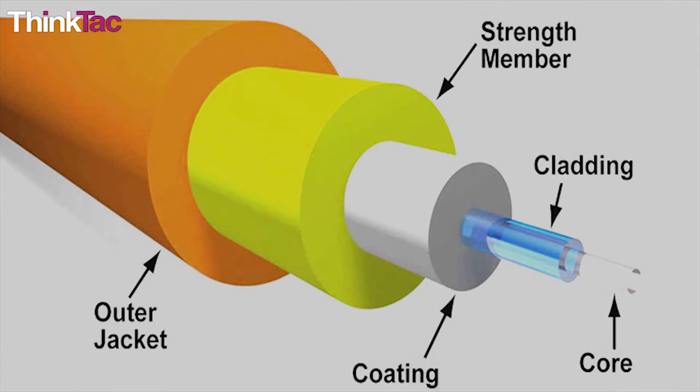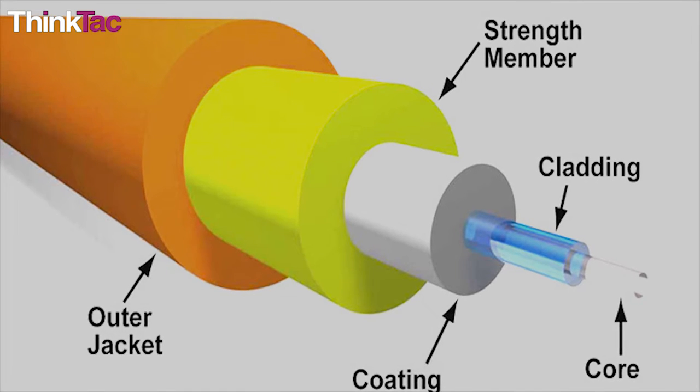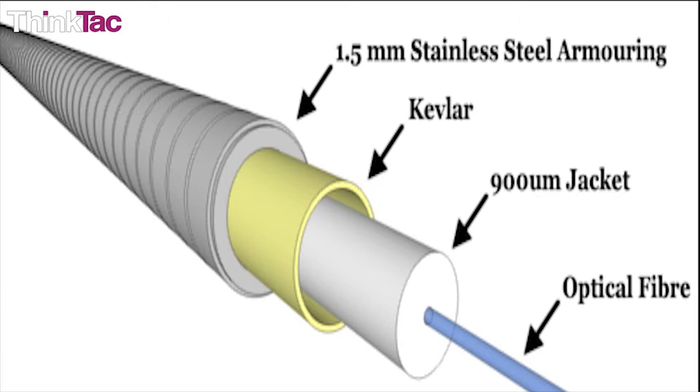There is a plastic coating outside the cladding which is twice the thickness of the cladding and the coating is surrounded by strengthening fibers made from a tough material like kevlar.